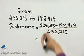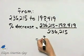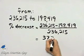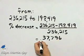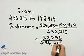And then we'll just write this as a percent. So if you subtract, you'll have 37,796 divided by 236,215.